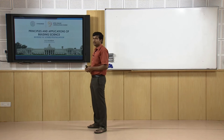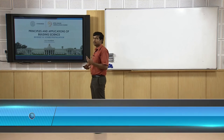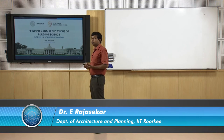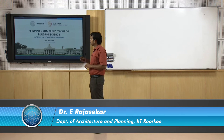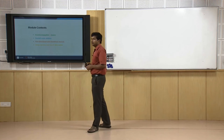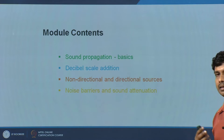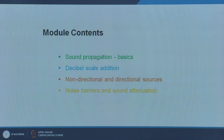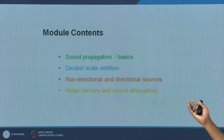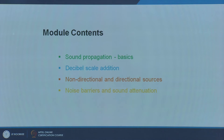In this module, we will be looking at the propagation of sound. We looked at the basics - the decibel scale and frequency spectrum in the earlier classes. We will here look at how sound propagates and talk about the basics. Another crucial thing is the addition of sound levels - when you have two or three sources, how do you add decibels? Then we will talk about directional and non-directional sources, and finally end with calculations associated with noise barriers and sound attenuation.